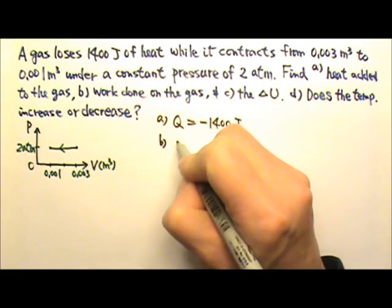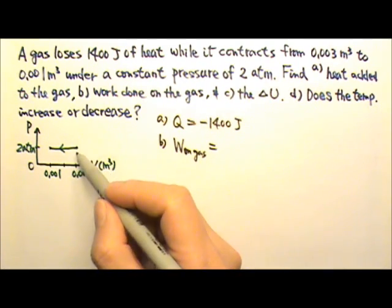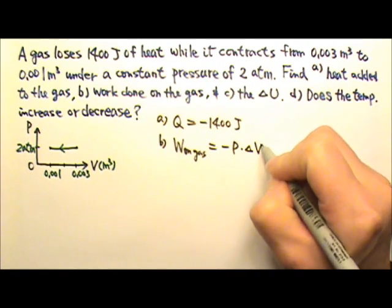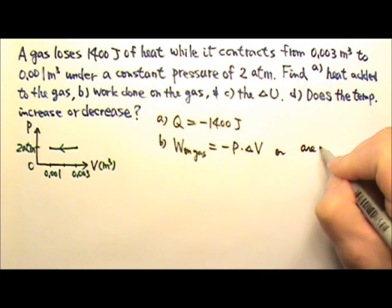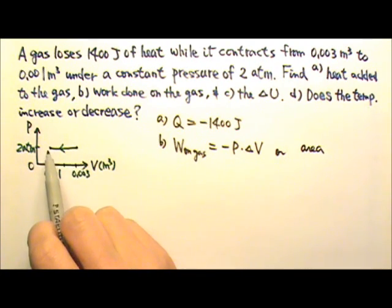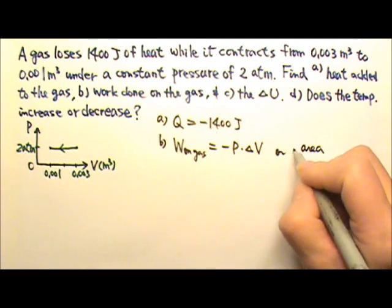Part B. The work done on the gas. The work done on the gas for an isobaric process is the negative P times delta V. Or we can say it is the area of the PV diagram. And because the volume decreases, that means the work done on the gas must be positive.